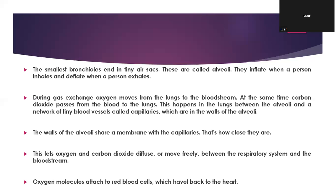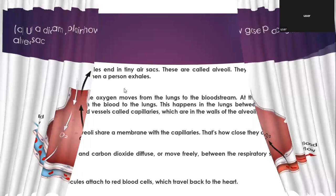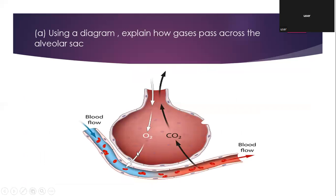During gas exchange, oxygen moves from the lungs to the bloodstream. At the same time, carbon dioxide passes from the blood to the lungs. This happens in the lungs between the alveoli and a network of tiny blood vessels called capillaries, which are in the walls of the alveoli. The walls of the alveoli share a membrane with the capillaries — that's how close they are. This lets oxygen and carbon dioxide diffuse or move freely between the respiratory system and the bloodstream. Oxygen molecules attach to red blood cells, which travel back to the heart. The alveolar sac is very thin so as to allow quick diffusion of the gases — the thinner a membrane is, the faster the gases are going to diffuse.